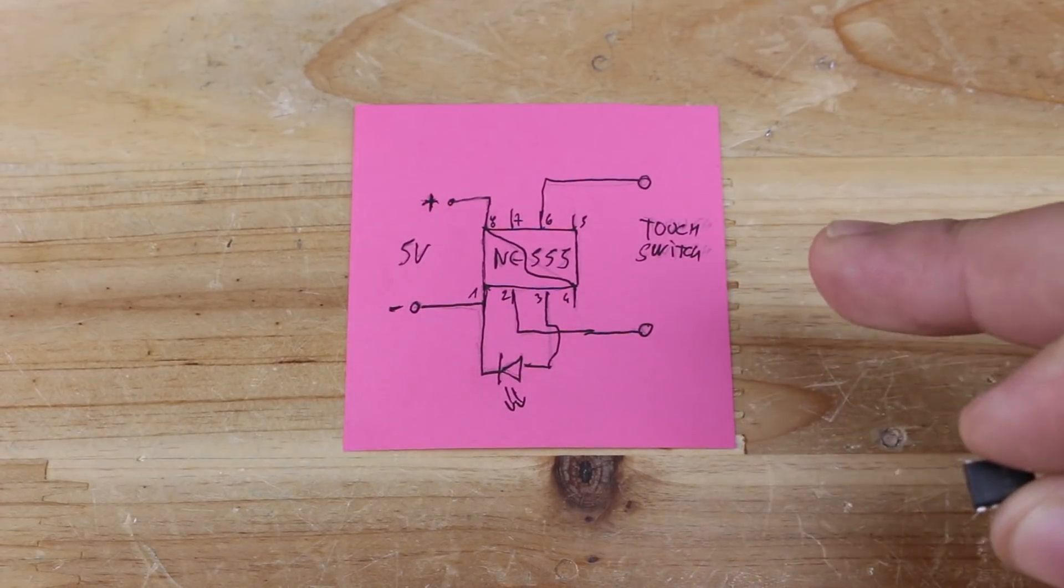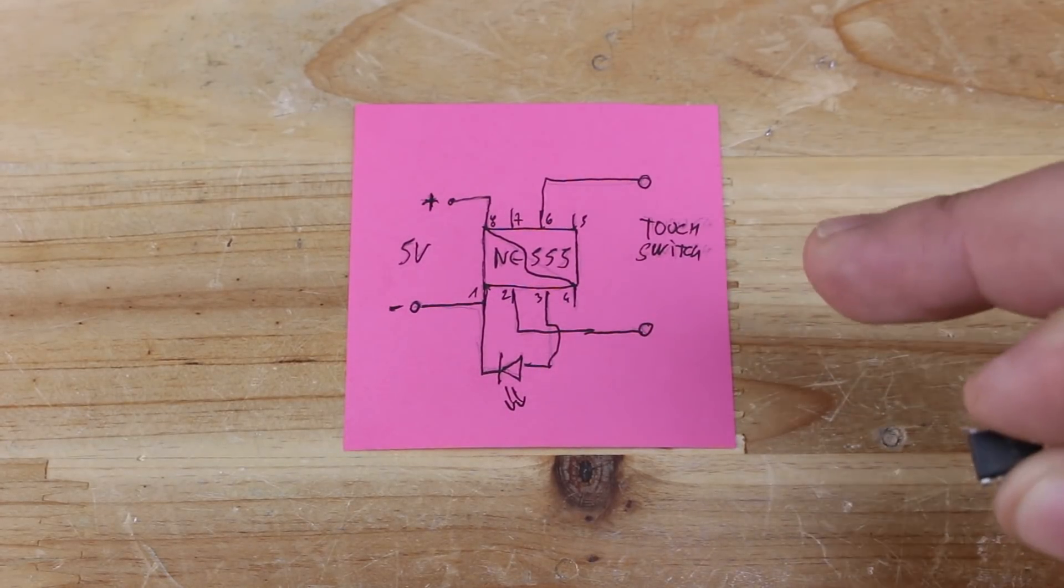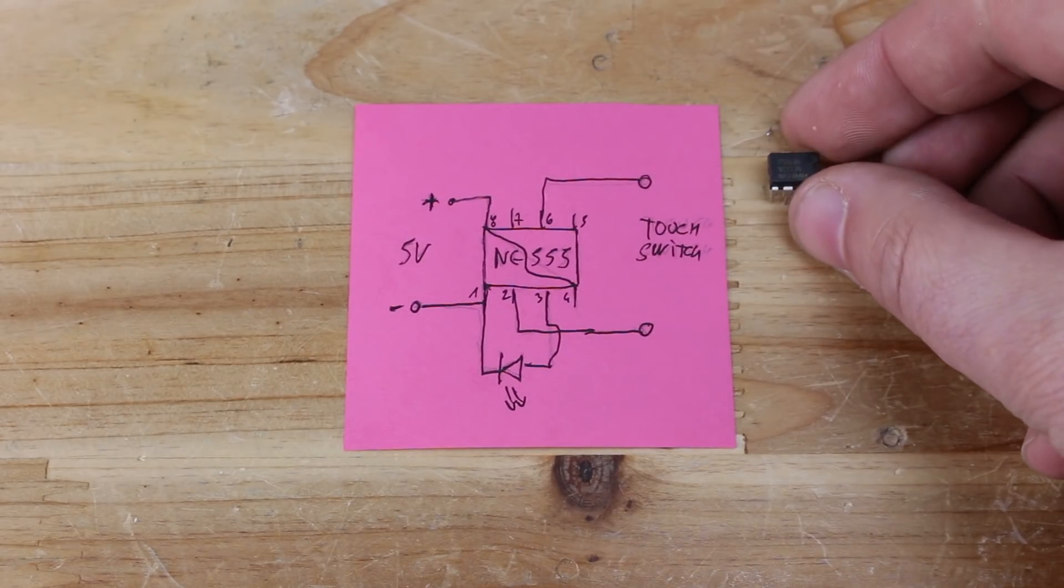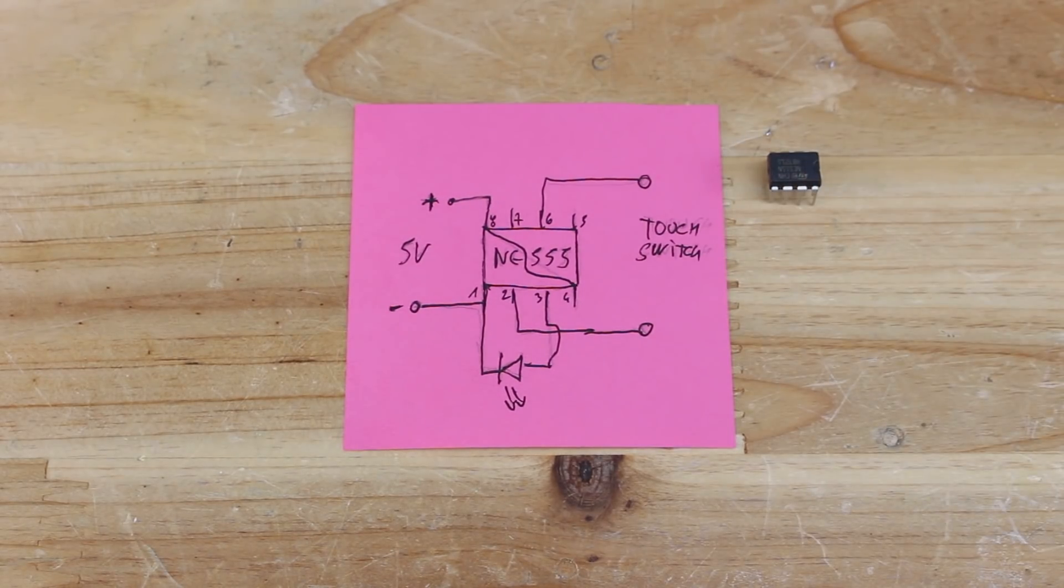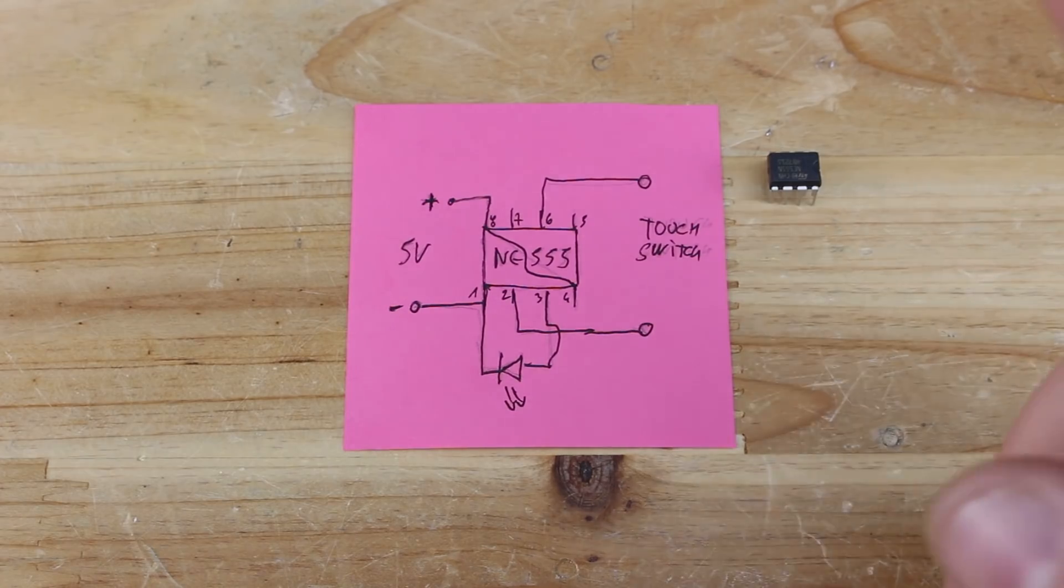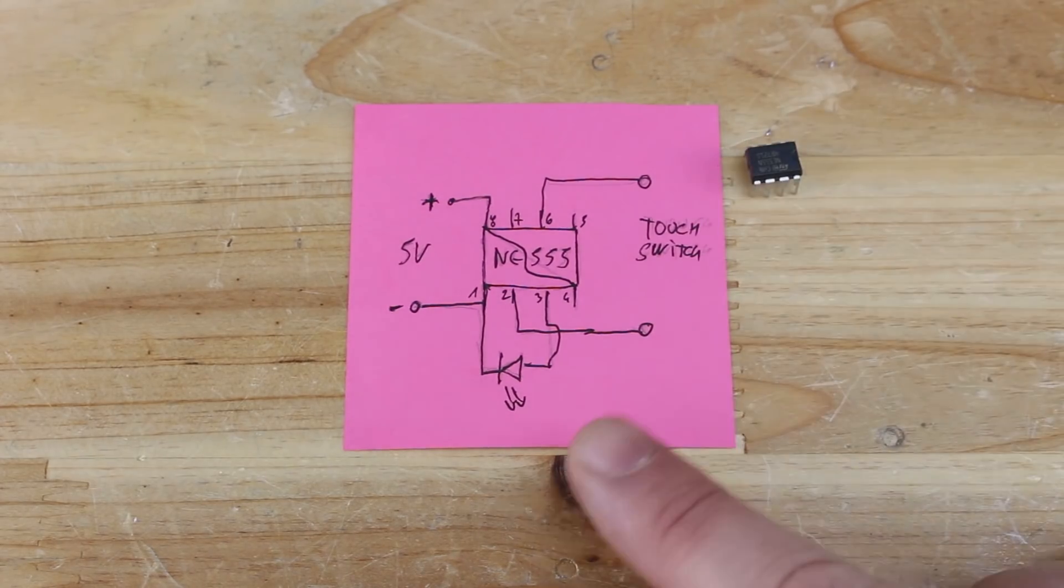This circuit is for making light touch switch with this 555 integrated chip and it's made with only this chip and one LED.